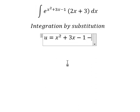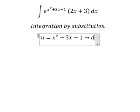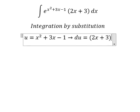We take the first derivative of both sides. So we have du = (2x + 3)dx.